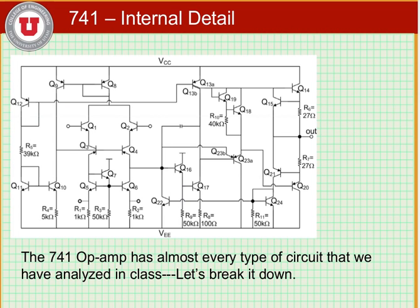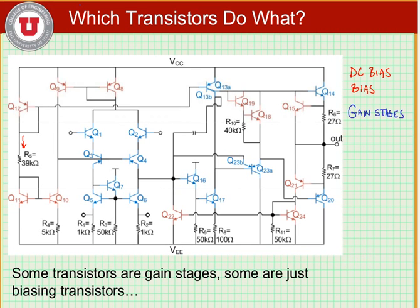If we take another look at the 741 op amp, we can highlight DC bias transistors in red, as I've done here. So these are DC bias transistors. And we can highlight gain stage transistors in blue.